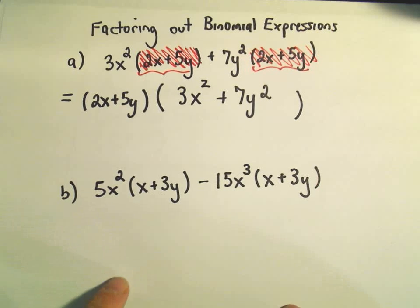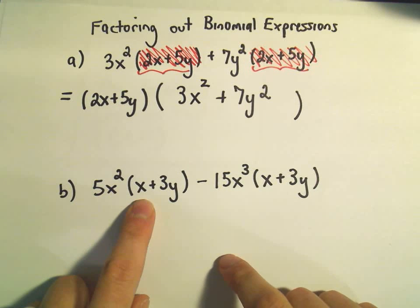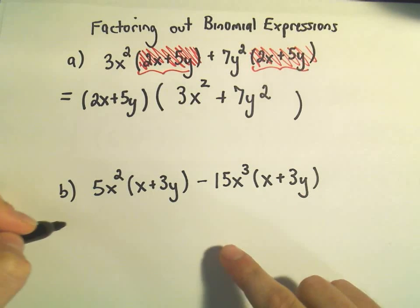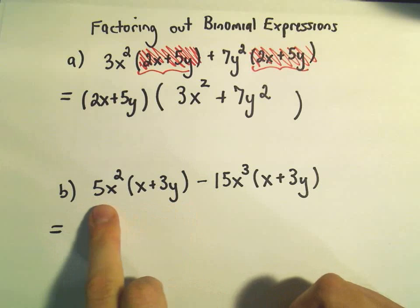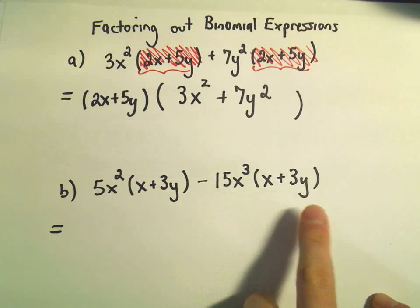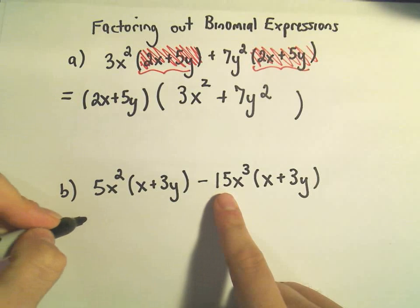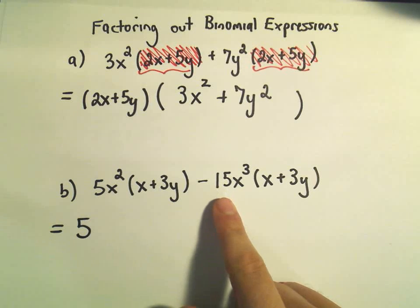Same idea in the next one. We have 5x squared times x plus 3y minus 15x cubed times x plus 3y. Same thought process, I see one big term, and then I see another big term. So I think 5 and 15, the greatest common factor of 5 and 15 would be 5.